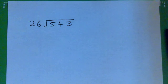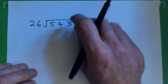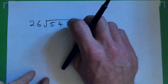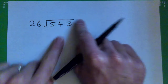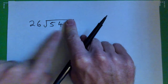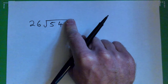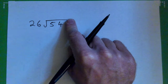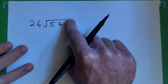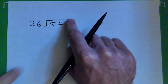Okay, so 26 into 543. Well, let's see. 26 into 54 — so we block off that 3 and we think about this. I just take a guess. Anyone watching from home, you can press pause on the video and try to take a guess.